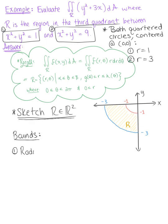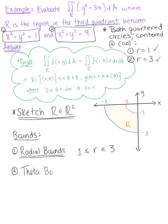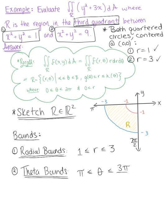We want our radial bounds — these are the radii of the two circles. Our first circle has a radius of 1 and the second circle has a radius of 3, so r is greater than or equal to 1 and less than or equal to 3. For the theta bounds, those are determined by the quadrant the region is in. Since we're in the third quadrant, theta goes from π to 3π/2.